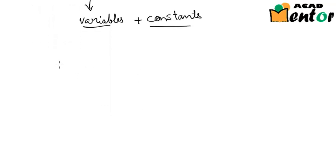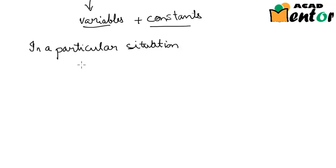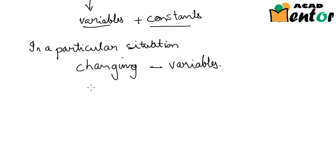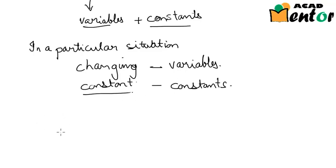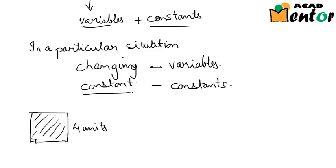So let's look at what variables are. In a particular situation, the parameters of that situation which are changing are known as variables. The parameters which define the situation and are constant are known as constants. For example, let's say we are supposed to find the area of a square whose side is 4 units. The area of a square is side times side, or side squared, so in this situation it would be 16 square units.